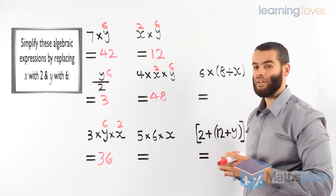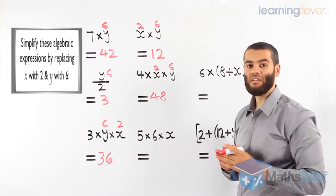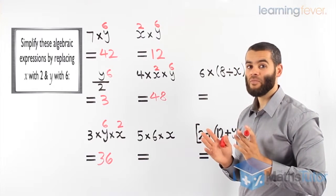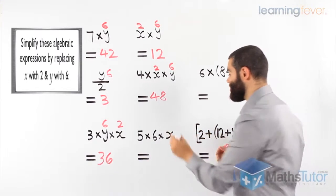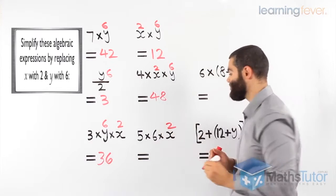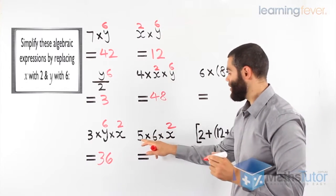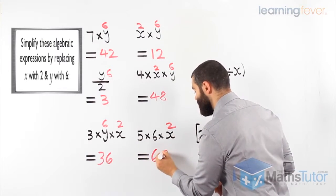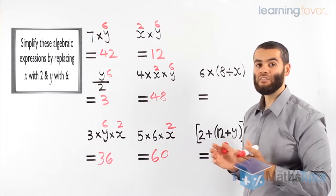Let's see if you can do this one. 5 times 6 times x. What's x? Think. What's it going to be? Very easy. It is 2. So, 5 times 6 is 30. 30 times 2. Our answer is 60.